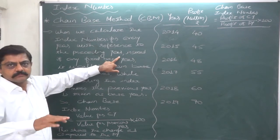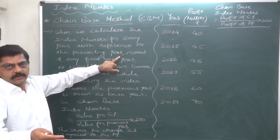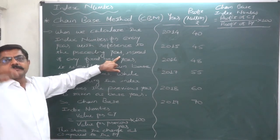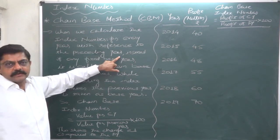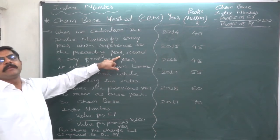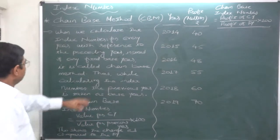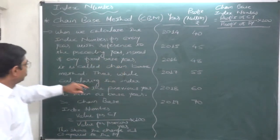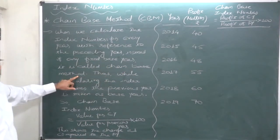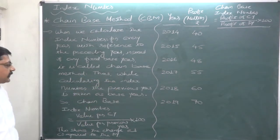So if the current year changes, Base year automatically changes. For 2008, 2007 was Base year. For 2009, 2008 becomes Base year, something like that. Instead of any fixed Base year, it is called chain Base method.